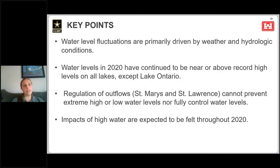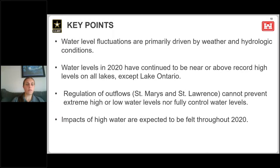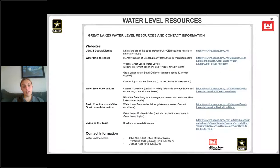To conclude with some key points: water level fluctuations are primarily driven by weather and hydrologic conditions. Water levels in 2020 have continued to be near or above record high levels on all of the lakes, really except Lake Ontario. Regulation of outflows through the St. Mary's and St. Lawrence Rivers cannot prevent extreme high or low water levels, nor can they fully control water levels. And lastly, impacts of high water are expected to be felt throughout 2020.